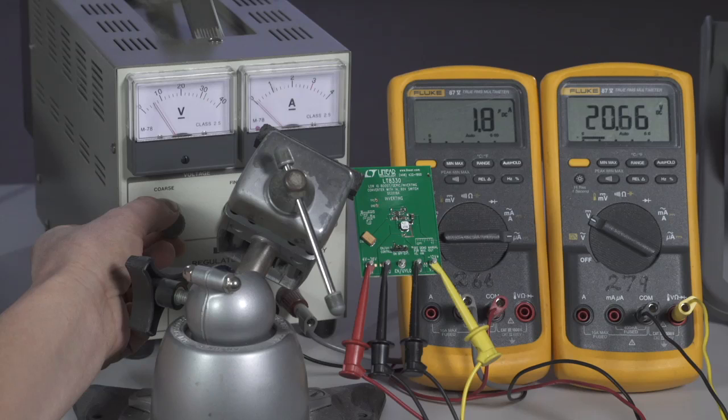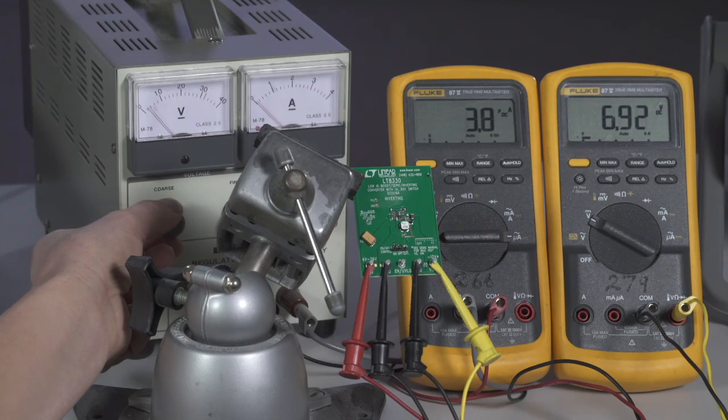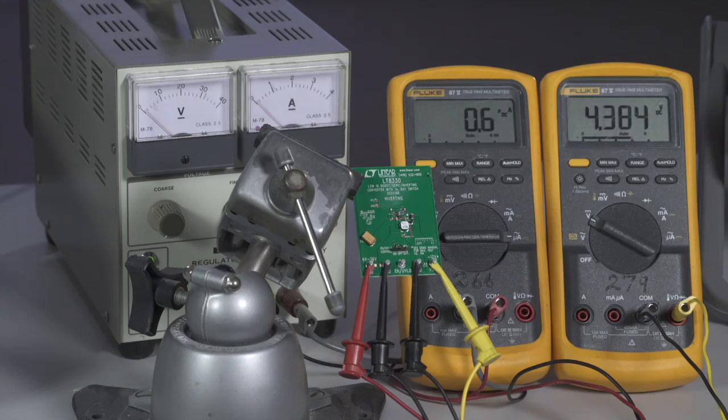The LT8330 has programmable undervoltage lockout with hysteresis. This SEPIC is programmed to start switching when the EN UVLO pin rises to 1.6 volts and stops as it falls below 1.6 volts.